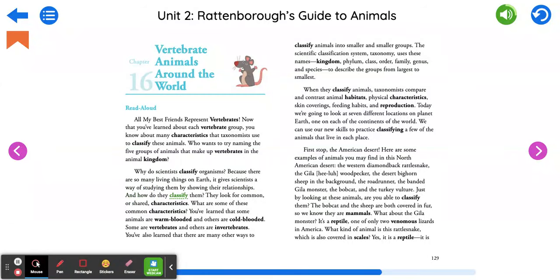And how do they classify them? They look for common or shared characteristics. What are some of these common characteristics? You've learned that some animals are warm-blooded and others are cold-blooded. Some are vertebrates and others are invertebrates.